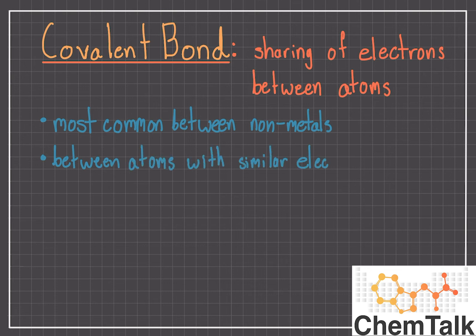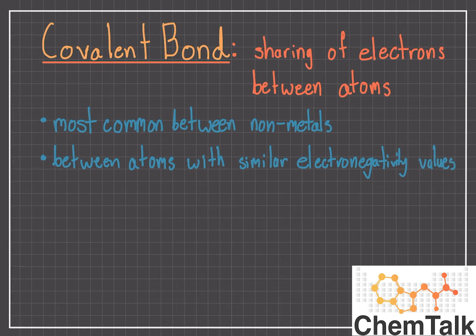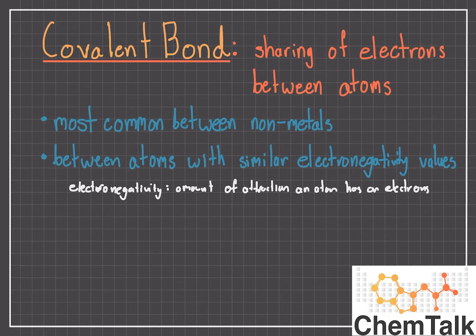These nonmetals have a more similar electronegativity value. Electronegativity is the amount of attraction an atom has on an electron. When nonmetals with similar electronegativity values interact, they'll often create a covalent bond between the atoms, which results in the sharing of electrons.